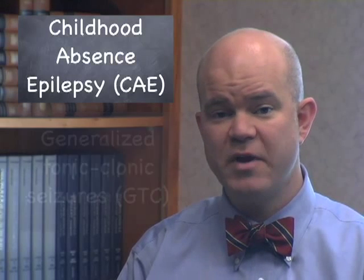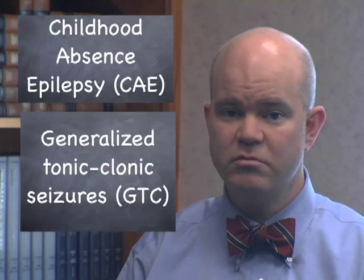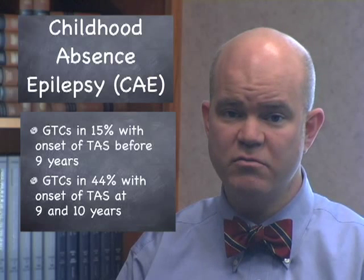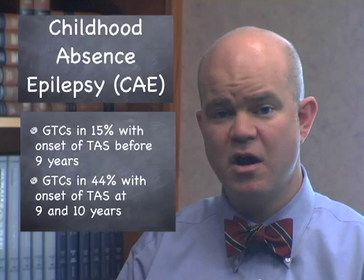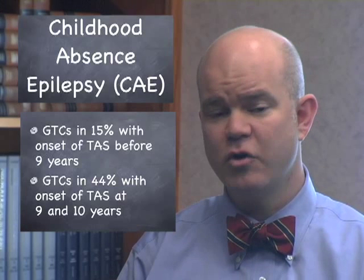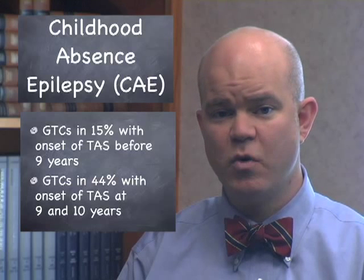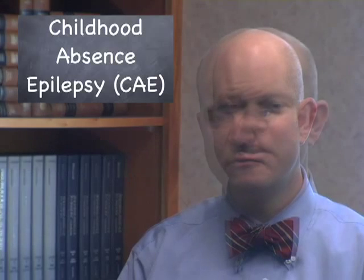However, there are also patients that can have generalized tonic-clonic convulsions. In general, this can be associated with the age of onset. If your absence seizures start when you're under 9, it's less likely that you're going to have a grand mal or generalized tonic-clonic seizure. If you're over 9, this is more likely, and some of these patients go on to develop juvenile myoclonic epilepsy. Traditionally, childhood absence epilepsy has been thought of as a relatively benign syndrome that children outgrow.